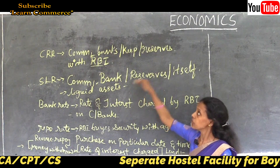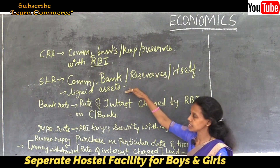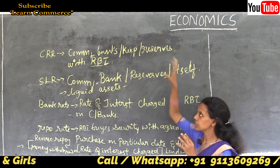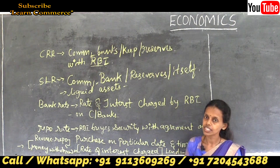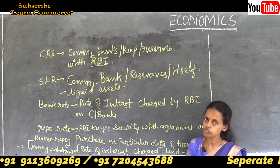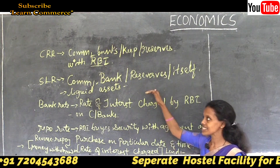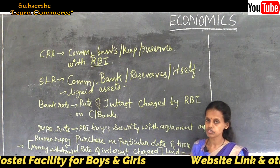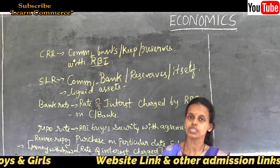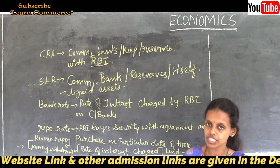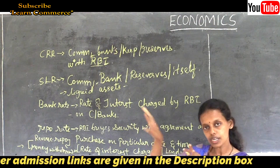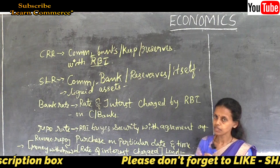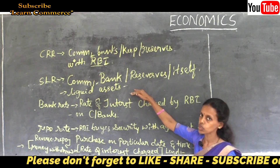The ratio at which liquidity is maintained by the commercial bank itself is called the Statutory Liquidity Ratio. For CRR, commercial banks receive a rate of interest from RBI since the money is kept with RBI. For SLR, there is no rate of interest, because the bank keeps the money with itself — just like keeping money at home earns no interest.